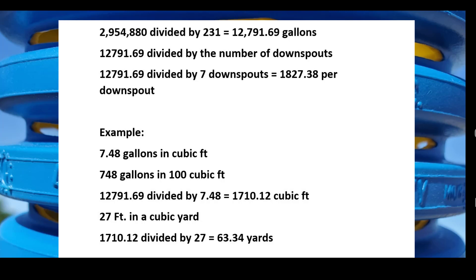Think about that — 12,791.69 gallons. If we divide that number by the number of downspouts, and in this case we're going to say this home had 7 downspouts, you can see that you have 1,827 gallons per downspout. Gutter runs are a little bit different, but it gives you an idea.